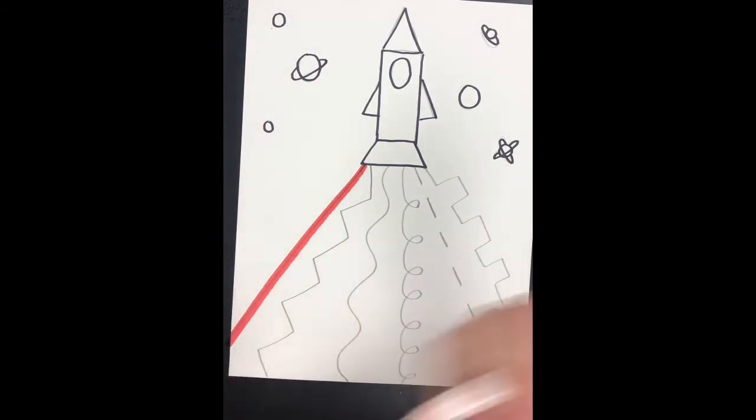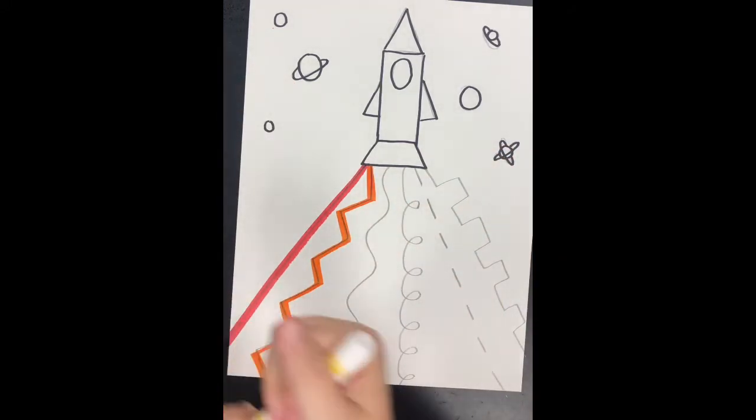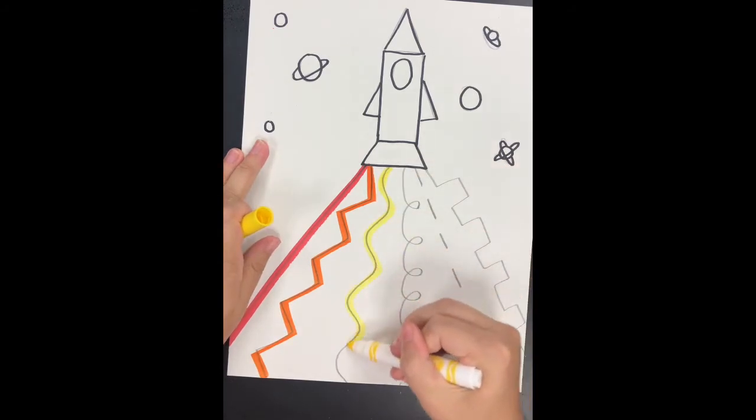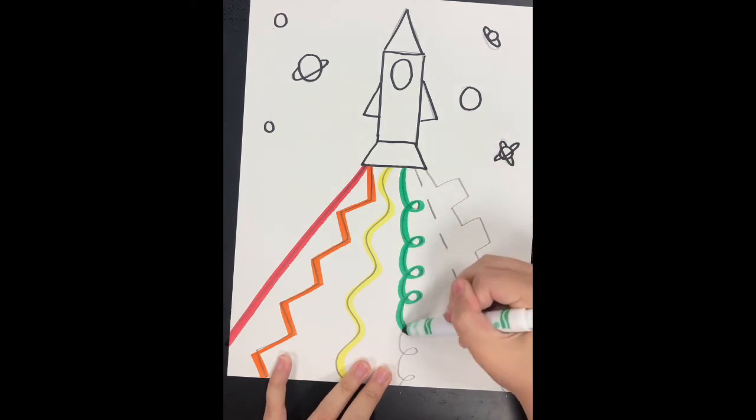So I'm going to start with Mr. Red. Then I'm going to tightrope walk with orange. Next comes yellow. My loop-de-loop line will be green.